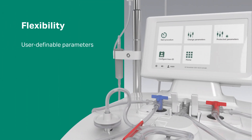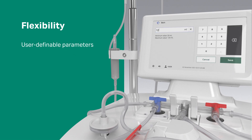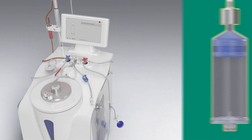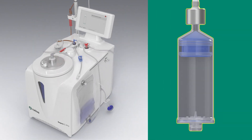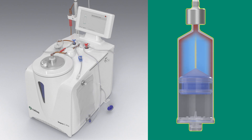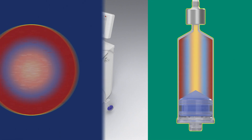The system offers user-definable parameters to provide flexibility. The procedure starts by priming the initial line with the initial product, then the separation chamber fills with density gradient medium. The initial product then gently fills into the separation chamber while the centrifugation is running.